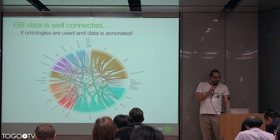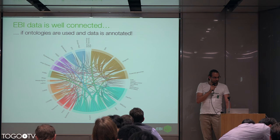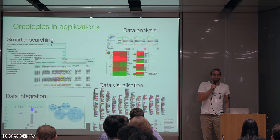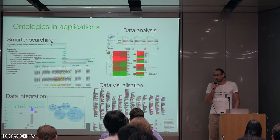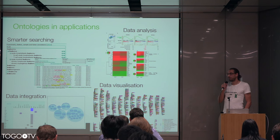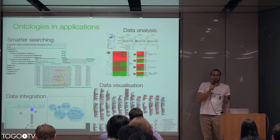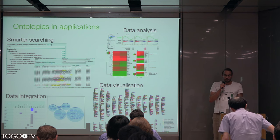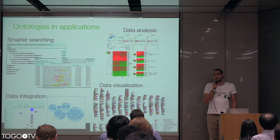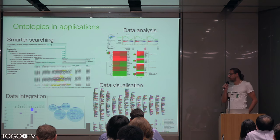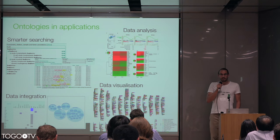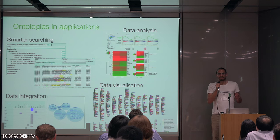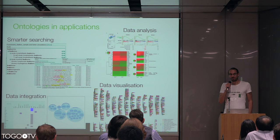Let me talk about ontologies for two slides, because we need ontologies for the RDF efforts to work. What can we do with ontologies? We can drive smart search, use ontologies in data analysis, use them for data visualization — like this diagram from the GWAS catalog — and ontologies are of course important for data integration, which is what we talk about when we talk about RDF.